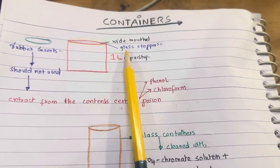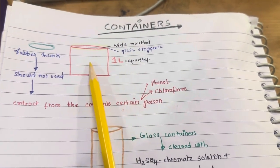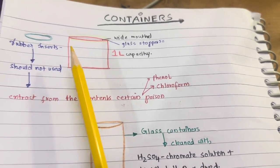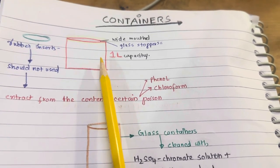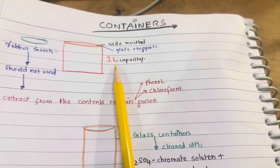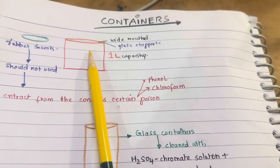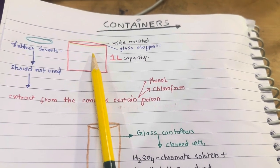Containers for preservation of the viscera. Glass bottles of 1 liter capacity are used, with wide mouths fitted with glass stoppers.